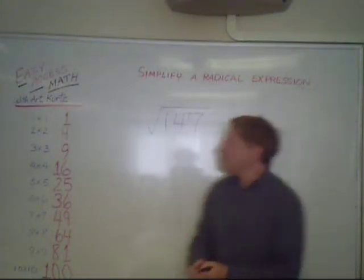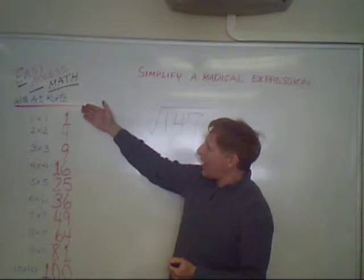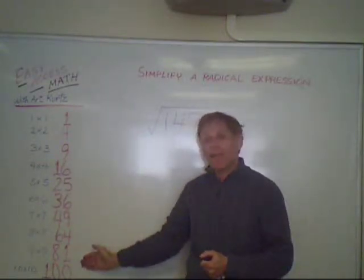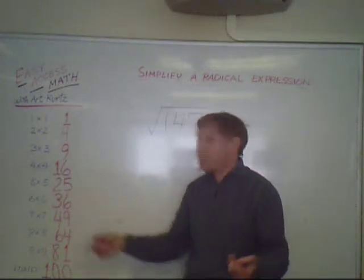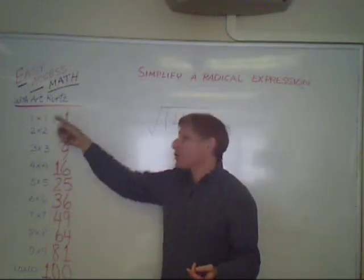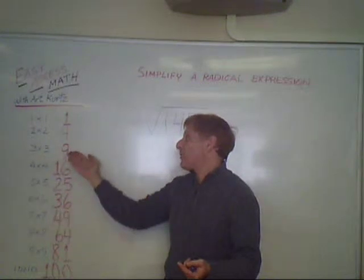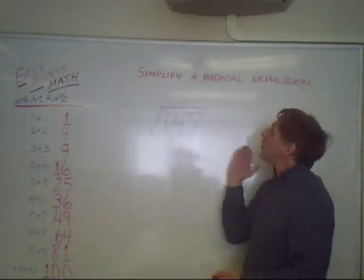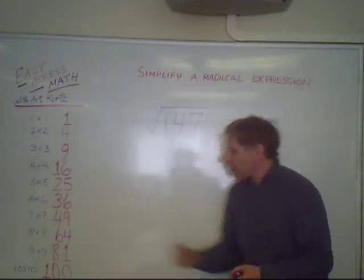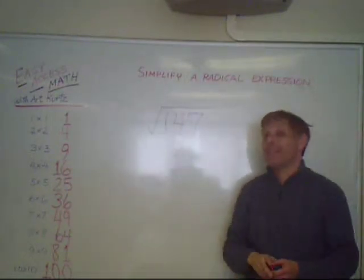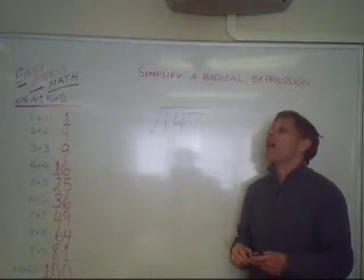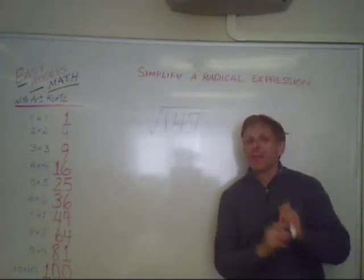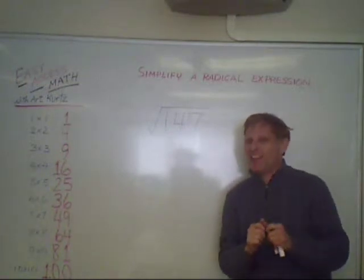So just to review, if you had any of these perfect square numbers in a radical, the answer would simply be the square root. So 3 times 3 is 9, the square root of 9 is 3. But when you have a number that's not on your perfect square list — 147 isn't — you could still often break it down if there's a perfect square in there.